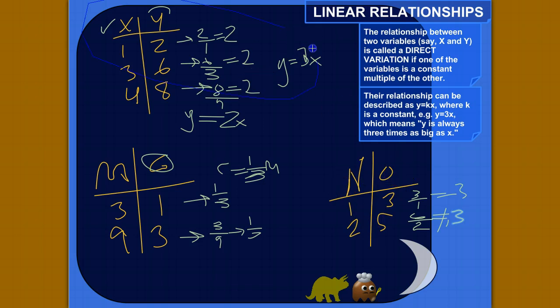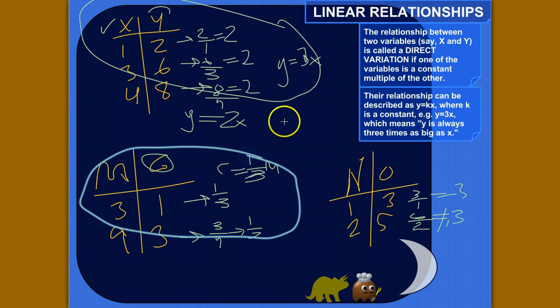So these are direct variations here. So you can write them as something like this where one variable is the other variable times a constant, a number like that.